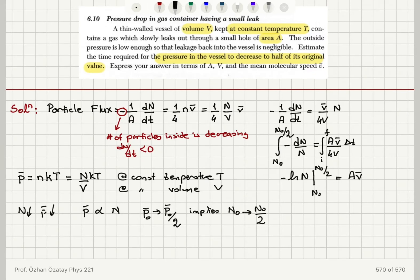If I take this integral, I will obtain minus natural logarithm N between N-zero and N-zero over 2, which equals A V-bar over 4V times delta T. This equals minus natural logarithm N-zero over 2 plus natural logarithm N-zero, which becomes natural logarithm N-zero divided by N-zero over 2, which is natural logarithm 2.